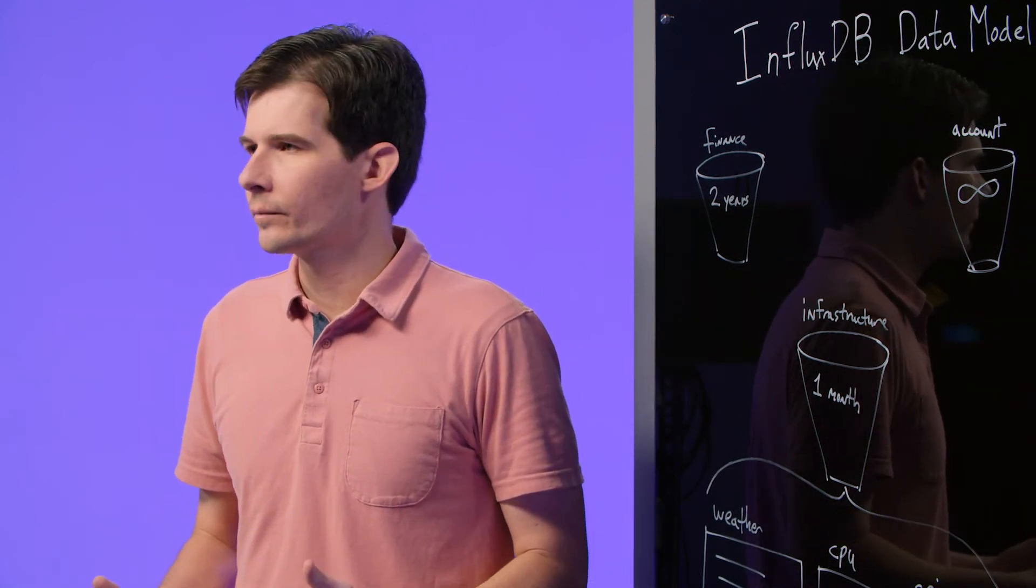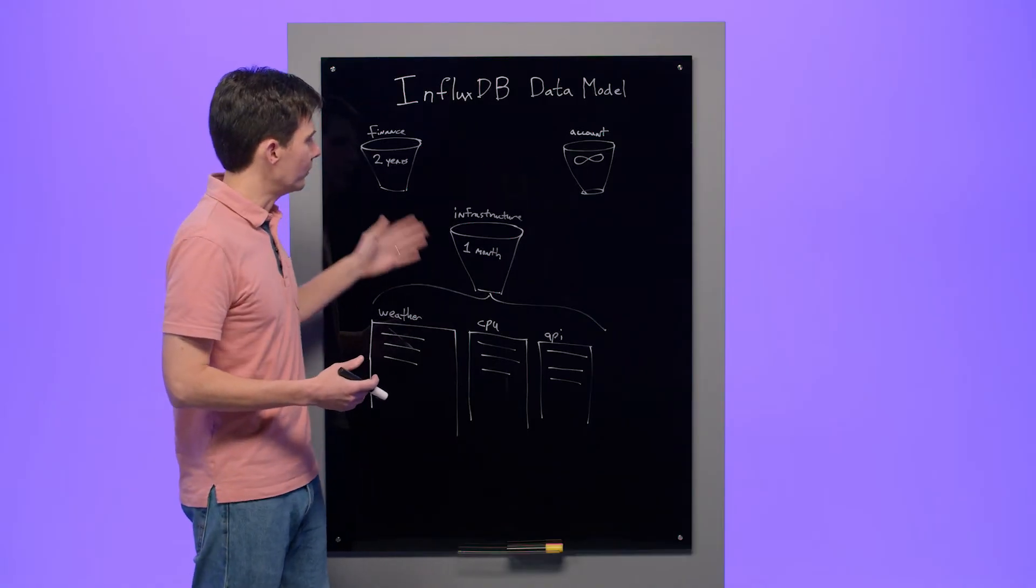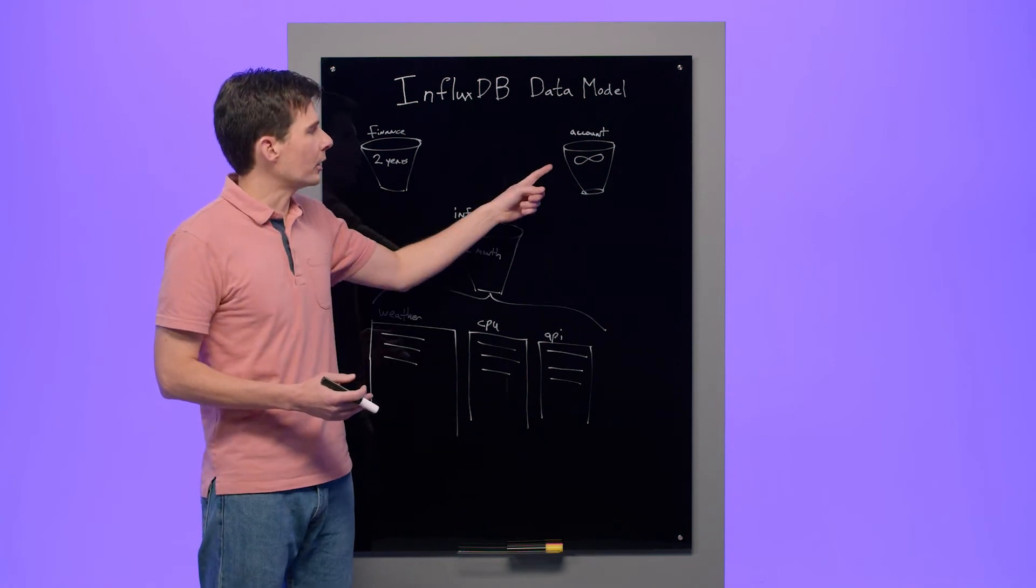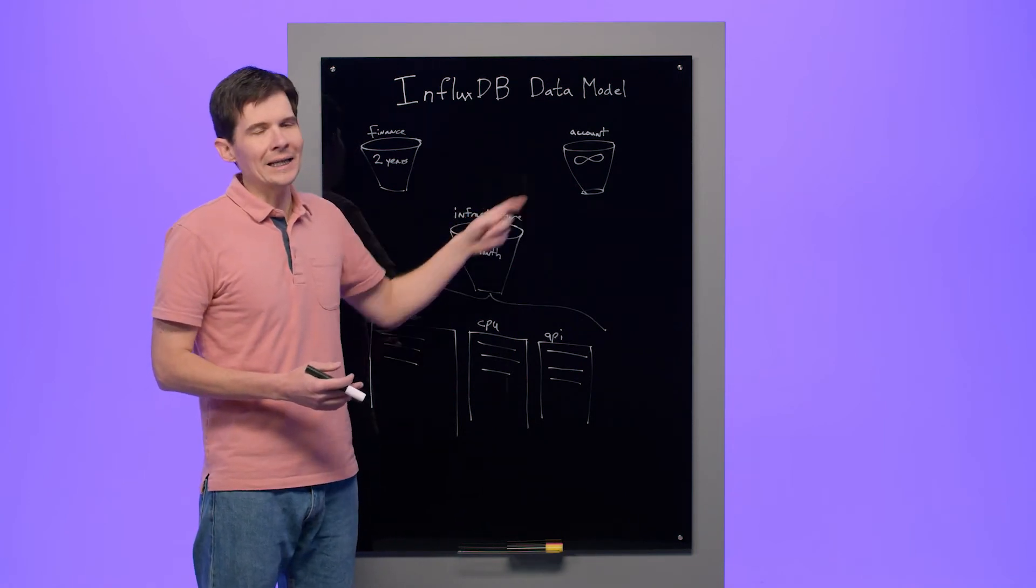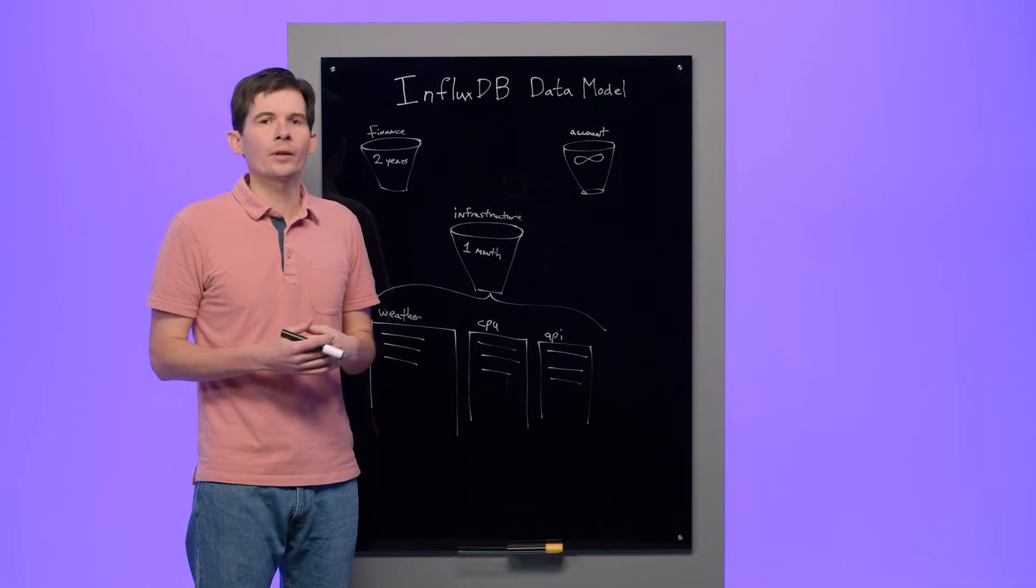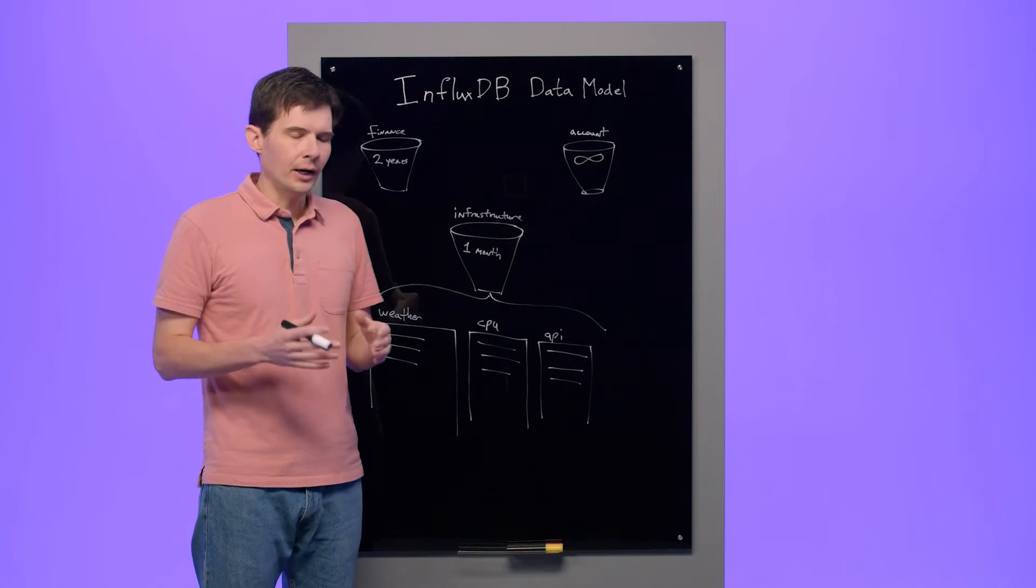The account bucket is where we'll store information about our customer accounts. This is a good place to keep maybe personally identifiable information because it's separate from the other places that we store the rest of our data. Also, our account bucket has an infinite retention policy. Infinite because we don't know how long any one account will exist. And so we want to track each account through its entire lifetime and let our application take ownership of deleting just that account's data when the time is right.